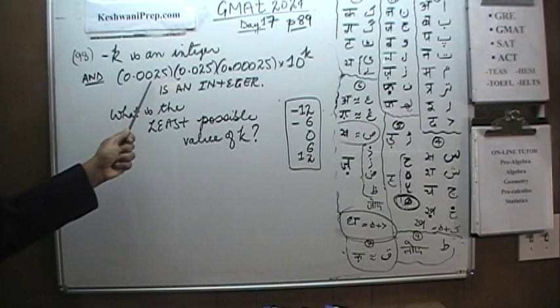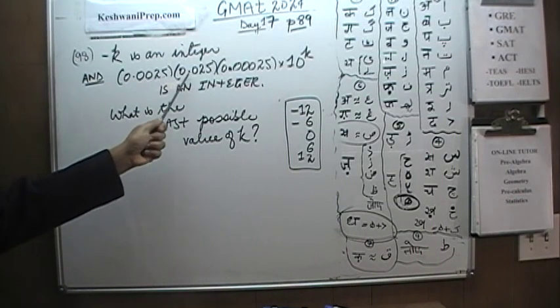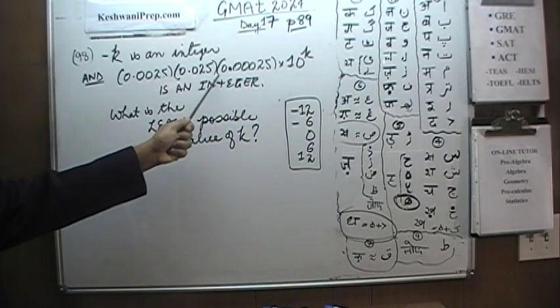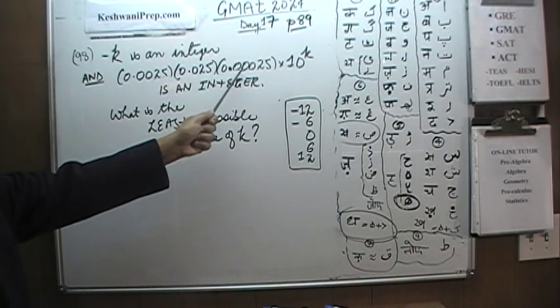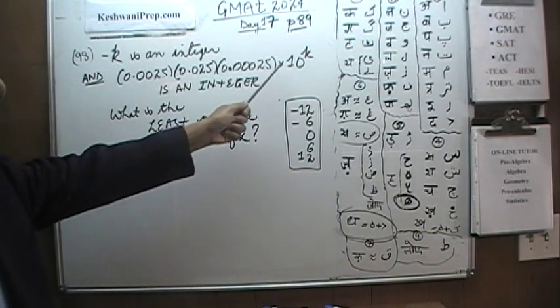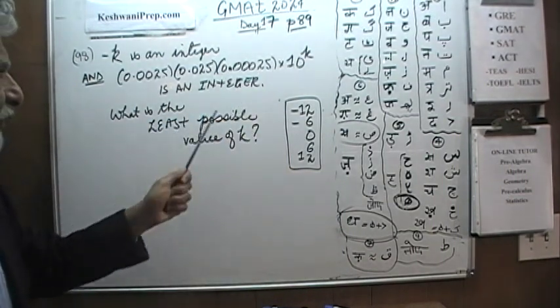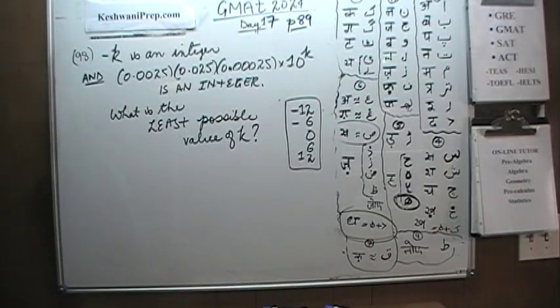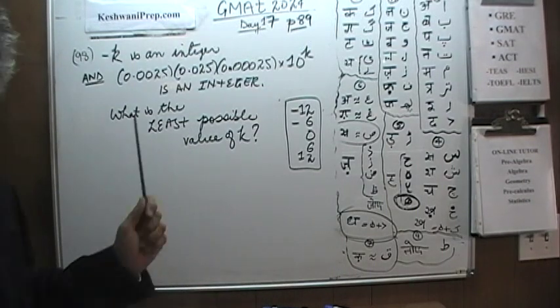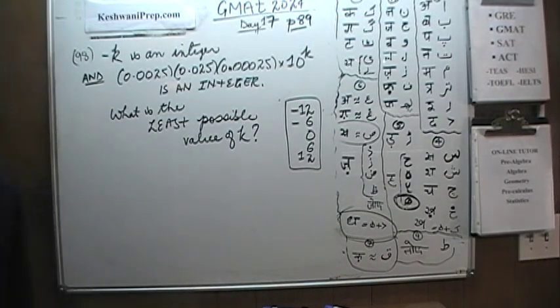One more time: 0.0025 times 0.025 times 0.00025 times 10 raised to K is an integer. Find the least possible value of K. Pause the video and do it yourself.